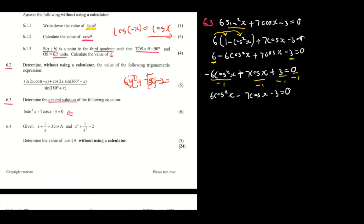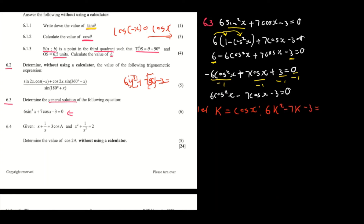Now you need to factorize, but it becomes tricky to factorize trig ratios directly. So let k equal cos x. This means if you write your equation it's just going to be 6k² minus 7k minus 3 equals 0.